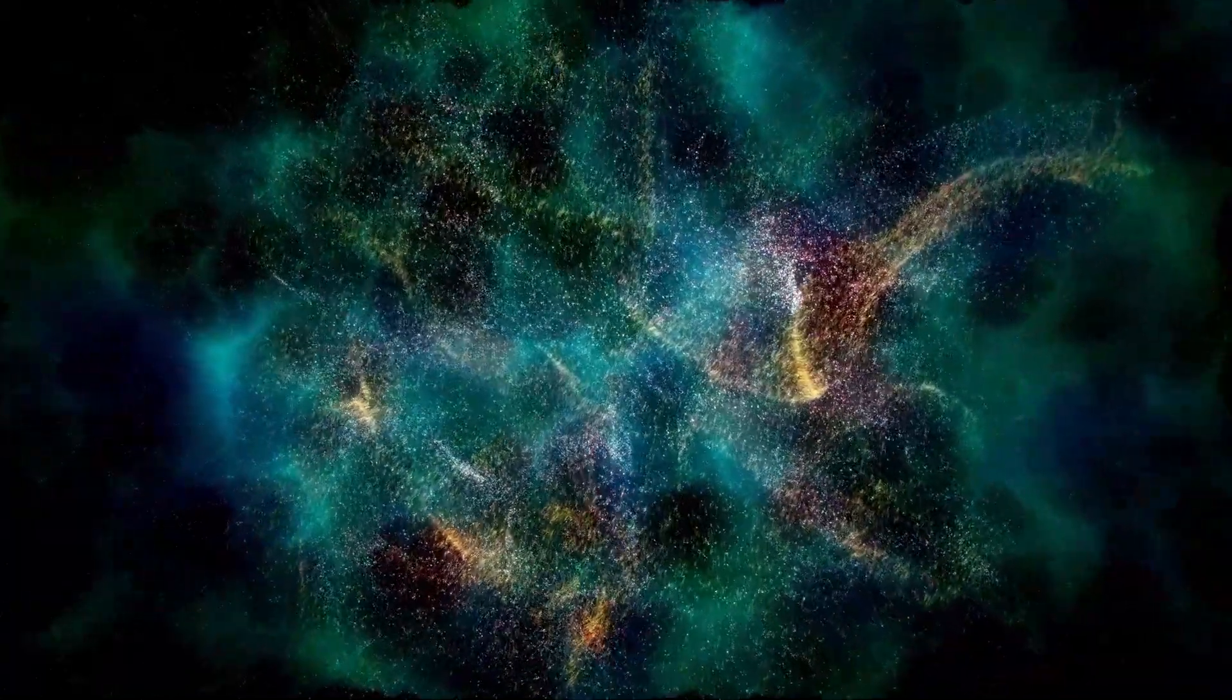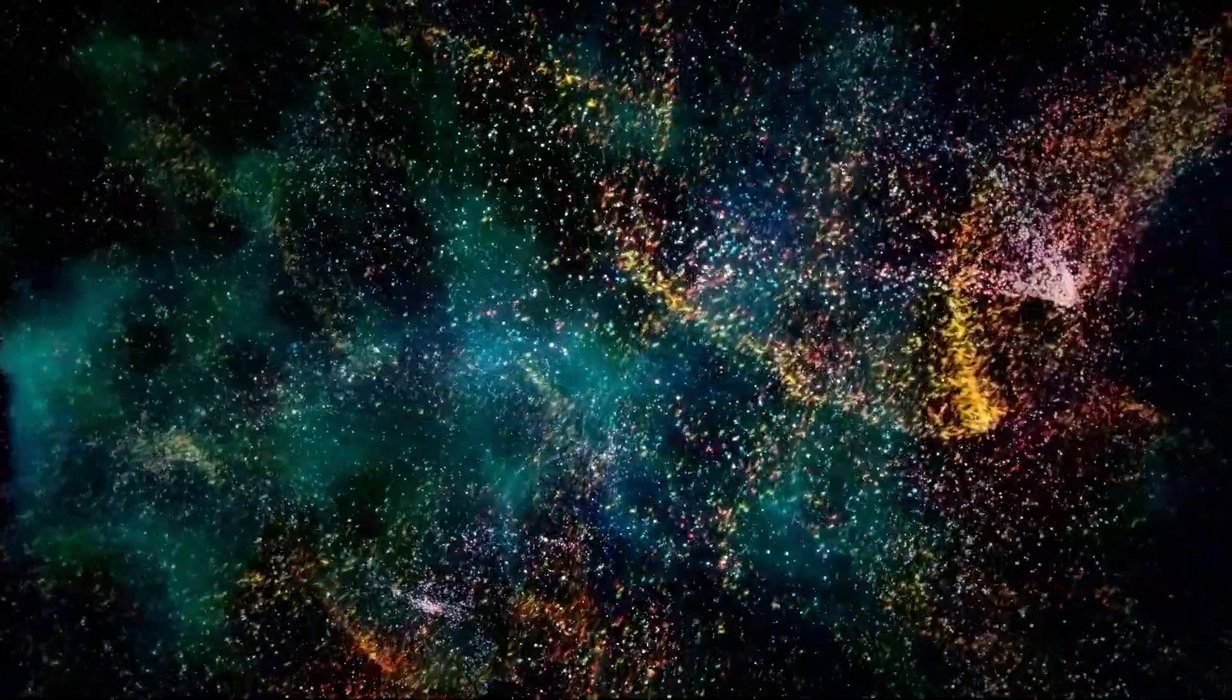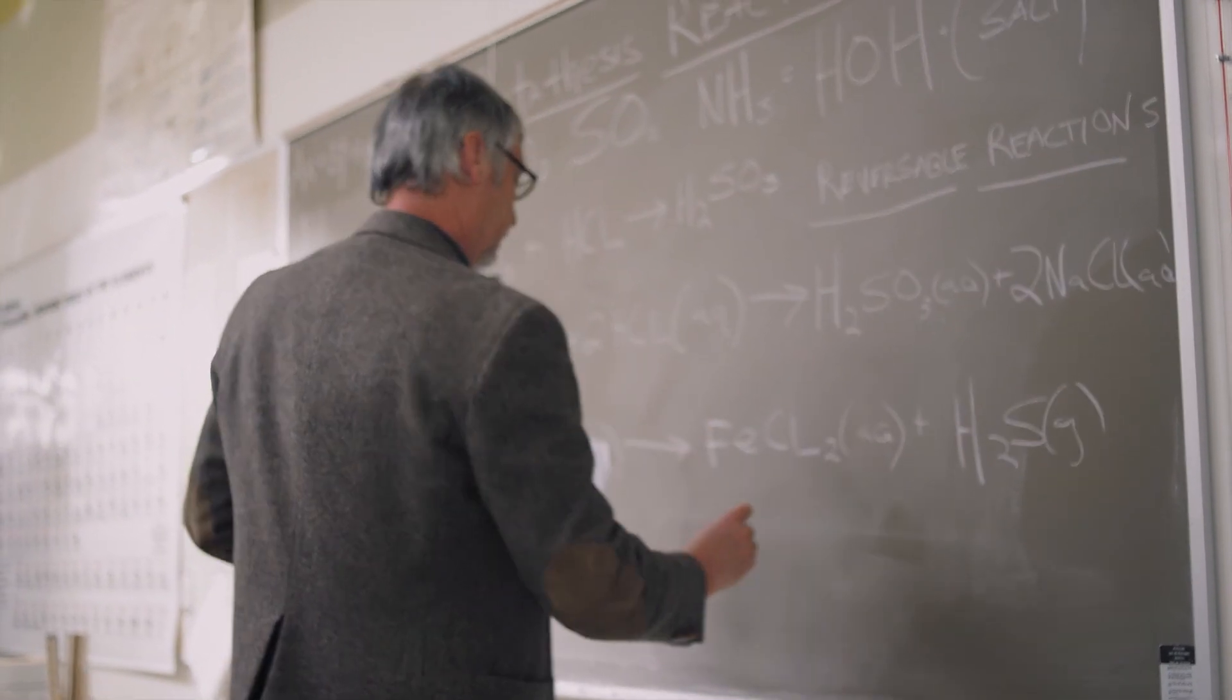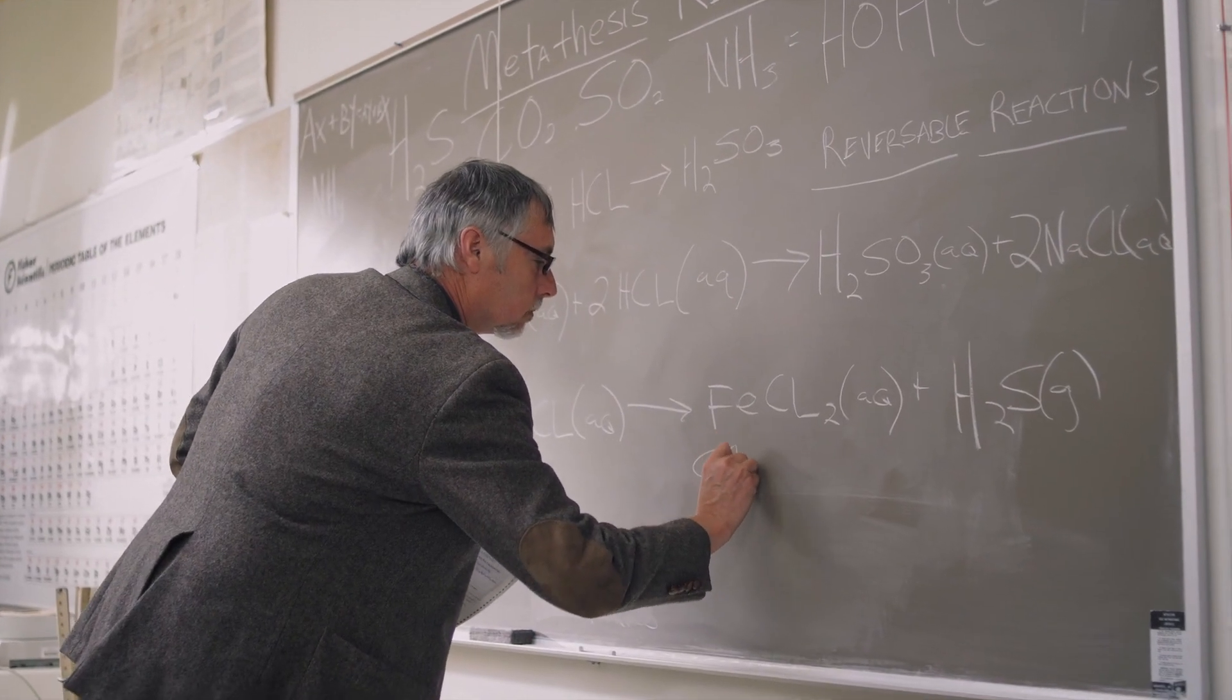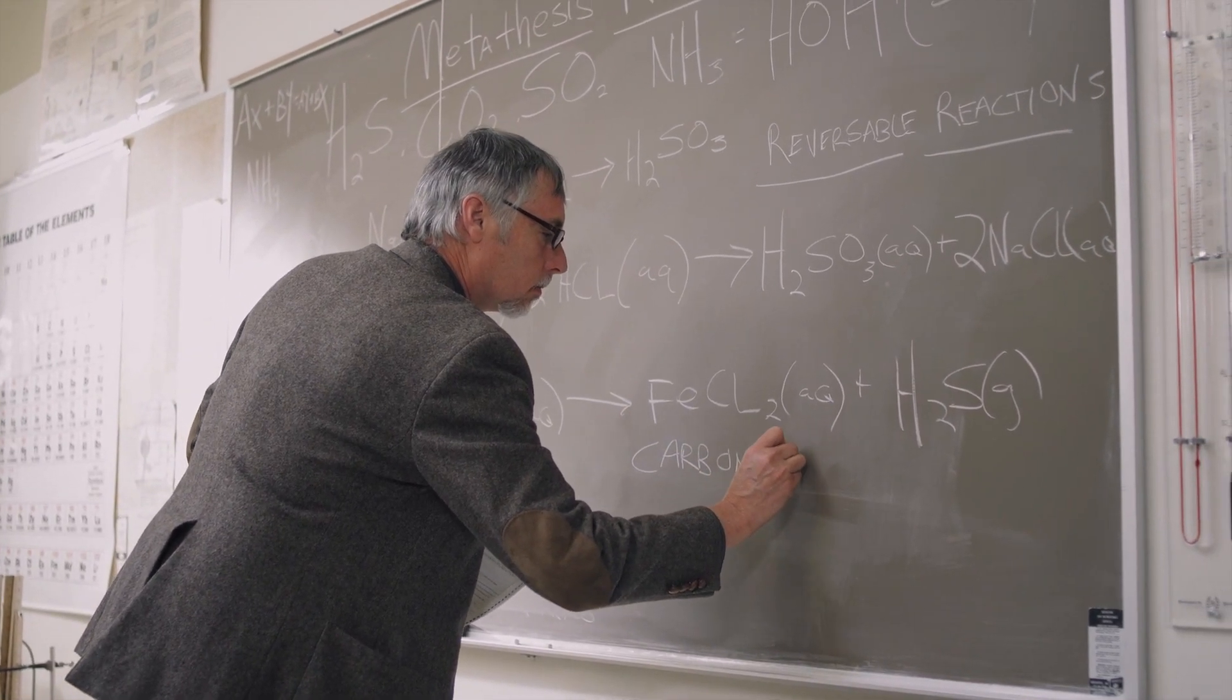For something to exist, there must be some form of material or components in place. But for those components to be available, something must have existed first. So where did the material that triggered the Big Bang originate? What occurred in the first moments to create that material?